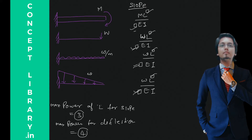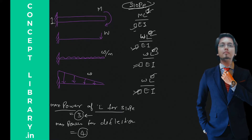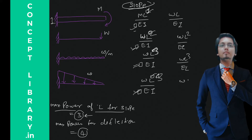The trick is about what numbers and powers go in each expression. For the first diagram, the power of L will be 1; for the second diagram it will be 2; for the third it will be 3. Since the maximum power of L for slope cannot go beyond 3, the fourth diagram also stays at 3. So it's ML¹/EI, and this will be wL³/EI — not power 4.